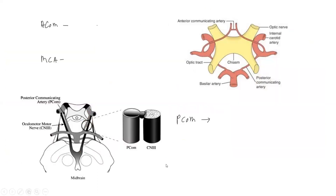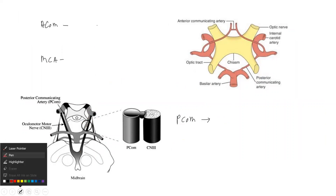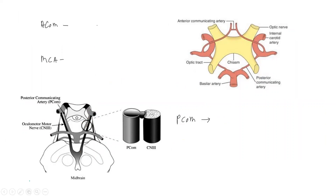What happens if there is an anterior communicating artery aneurysm causing compression of surrounding structures? The anterior communicating artery aneurysm — the AComA aneurysm — can easily compress the optic chiasm. We know that if there is compression of the optic chiasm, it can cause bitemporal hemianopia.